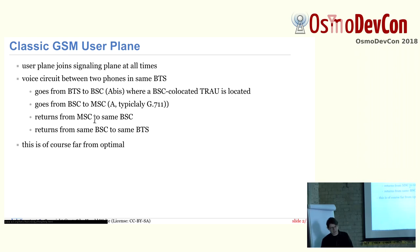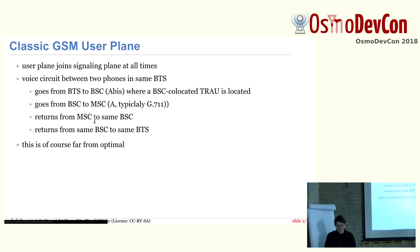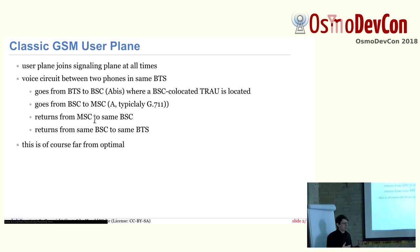If we think of how the user plane is arranged in GSM traditionally, basically the user plane and the signaling plane are always at the same time. You have an E1 line, and that E1 line has signaling and associated voice channels or circuit-switched data. And the voice circuit between two phones in the same BTS would traditionally go — so you have two subscribers, two phones registered to the same BTS and they call each other.